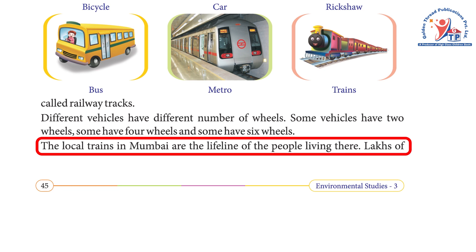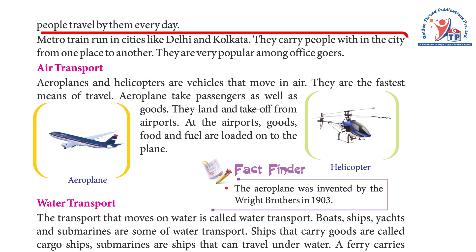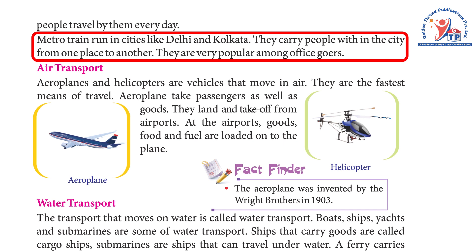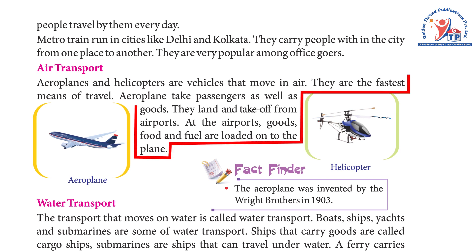The local train in Mumbai is the lifeline of the people living there — lakhs of people travel by them every day. Metro trains run in cities like Delhi and Kolkata. They carry people within the city from one place to another and are very popular among office-goers.